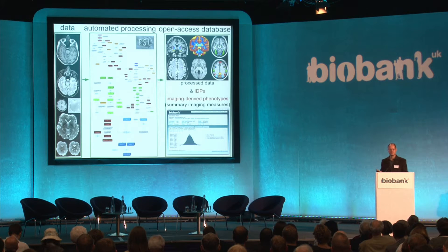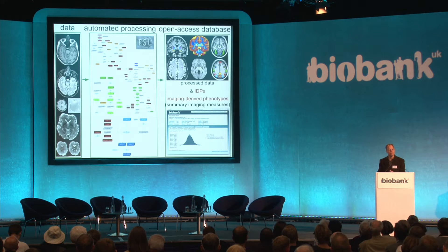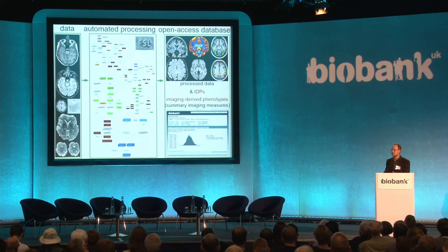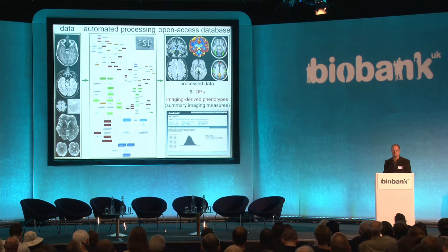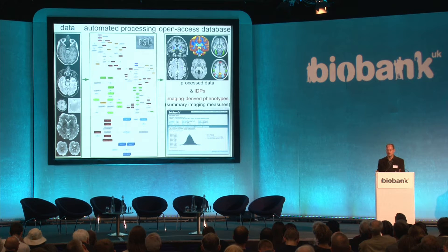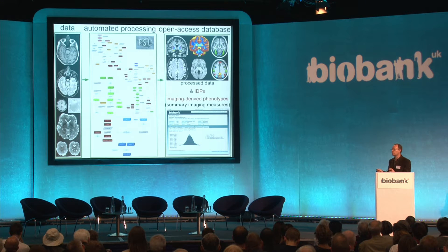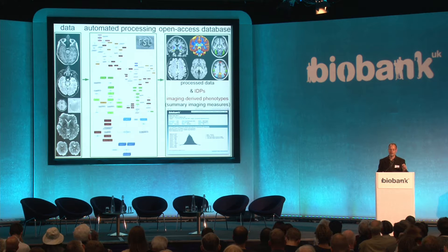We also create imaging-derived phenotypes, or IDPs, as described before. These IDPs coalesce the data down into single numbers — something like the volume of the hippocampus is a single number representing all the size and shape information from the image. That can be used by many people to quickly look at all sorts of relationships between the brain and other things. We cater for people who want summary information, people interested in spatial location, and the smaller percentage of imaging experts who want to work with the raw data.